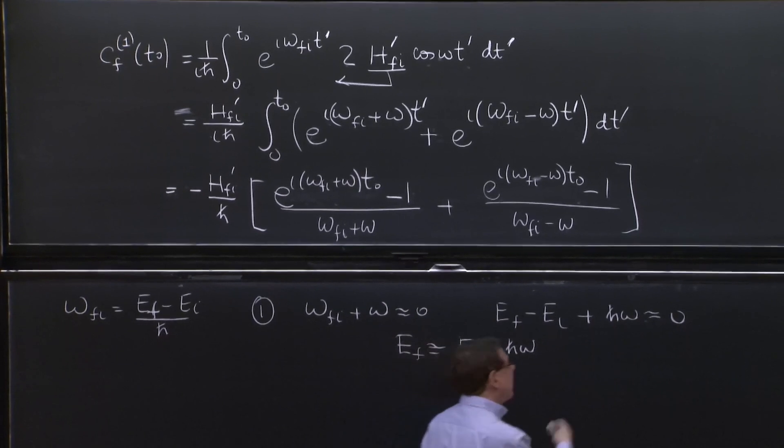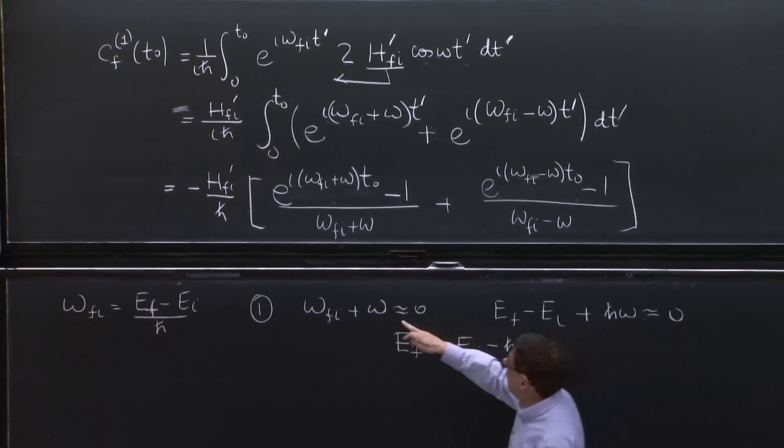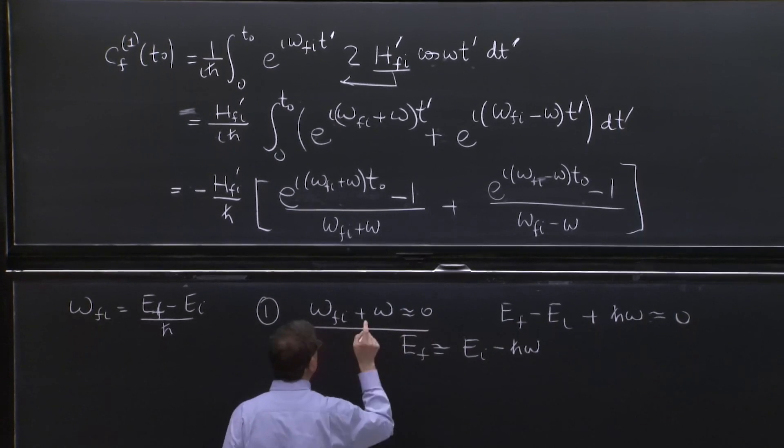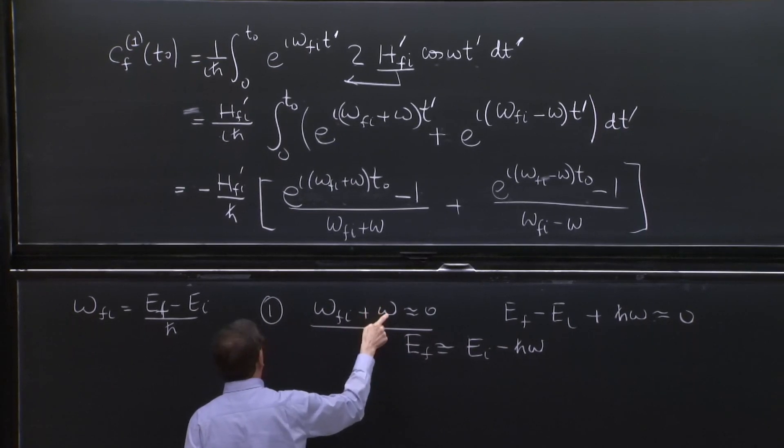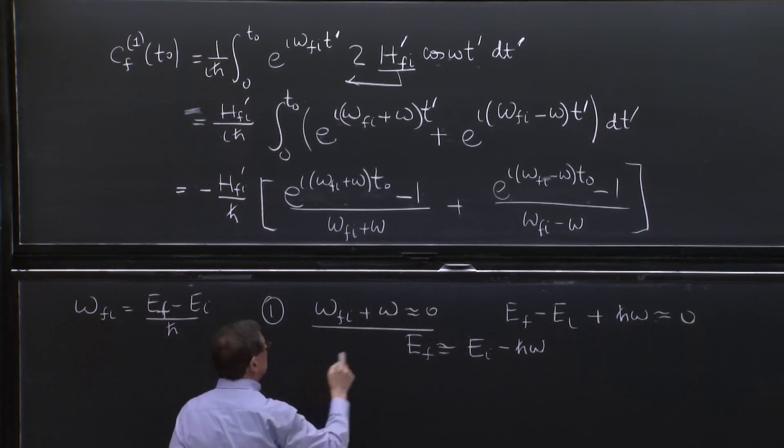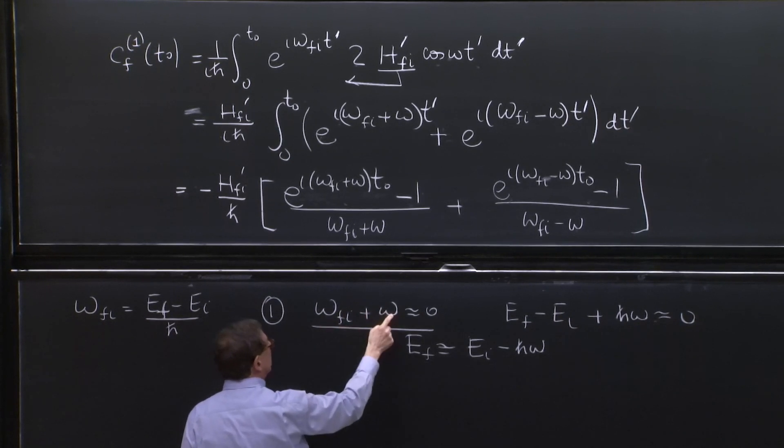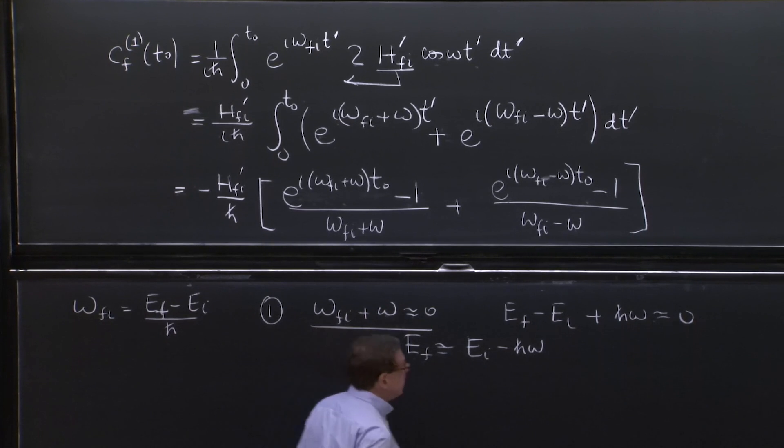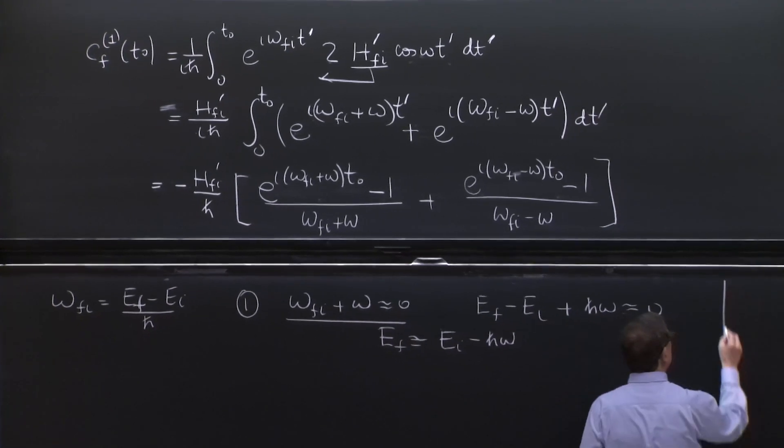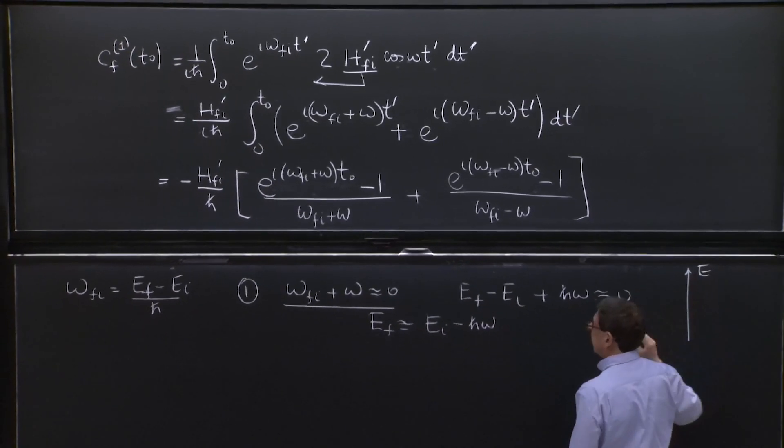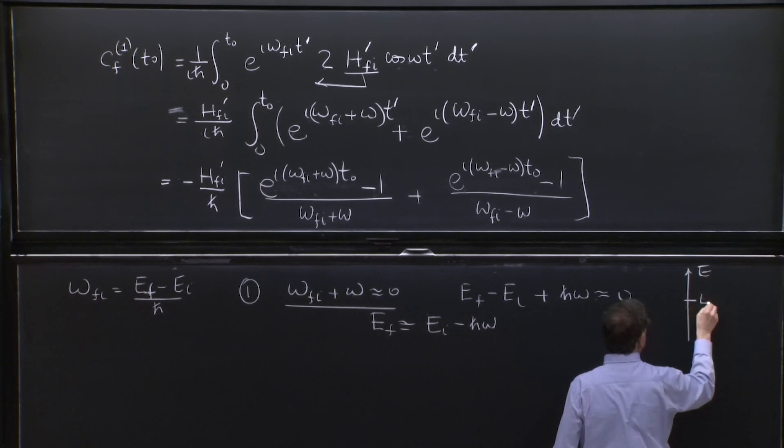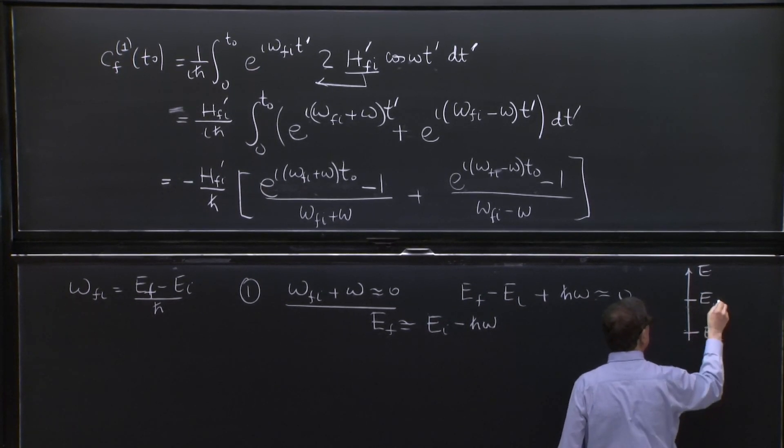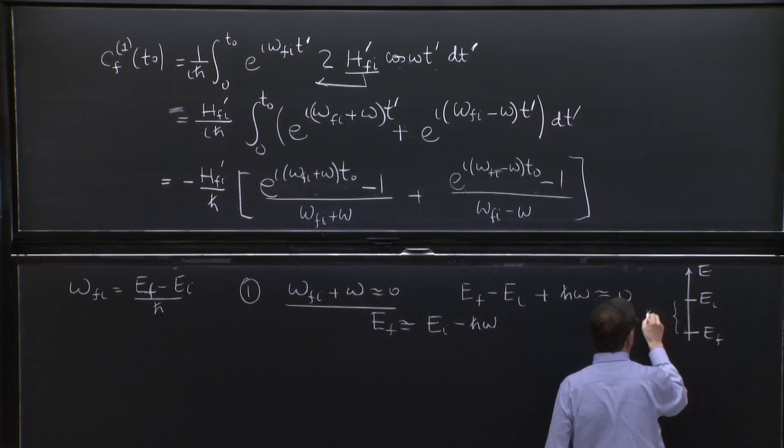So what has happened if you have a number? The question is, when this happens, which means that your omega, that is your perturbation, is tailored to produce this. Then EF is EI minus h omega. So you can think of the energy scale here. And EF is lower than EI. And the difference is h bar omega.